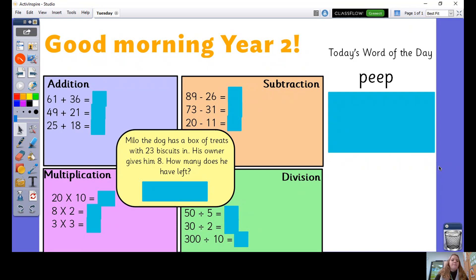We're going to share the answers together now. So looking at our addition first of all, 61 add 36 equals 97, 49 add 21 equals 70, 25 add 18 equals 43.